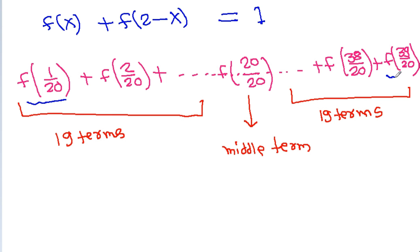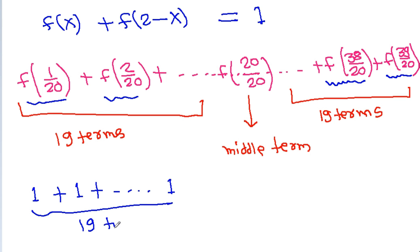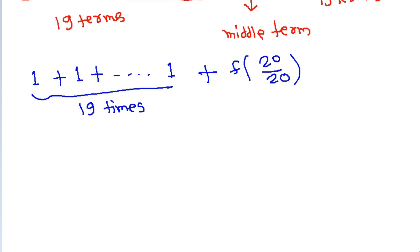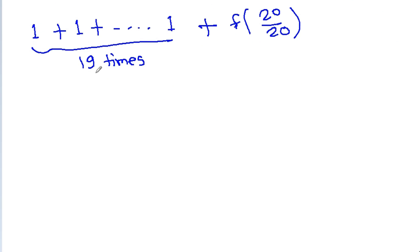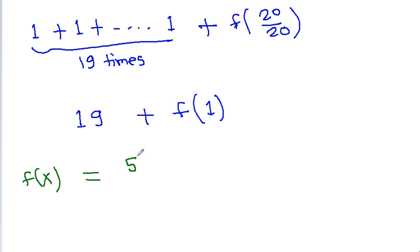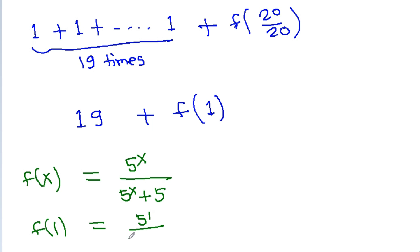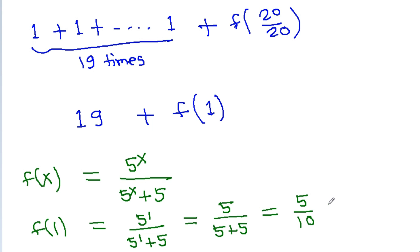So f(1/20) + f(39/20) = 1, giving us 19 pairs summing to 19. For the median term f(20/20) = f(1), we compute: f(1) = 5^1 / (5^1 + 5) = 5 / (5 + 5) = 5/10 = 1/2.